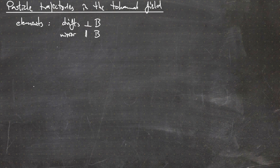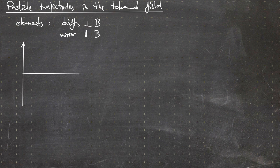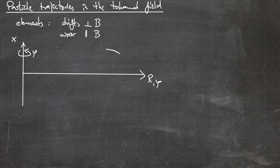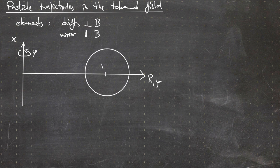Let's draw a coordinate system and introduce the most important quantities. We have the direction x, the toroidal direction phi, and capital R — sometimes also small y depending on whether we're in cylindrical or Cartesian coordinates. Here we have R naught, and small r, and the angle theta.